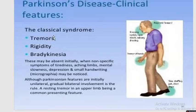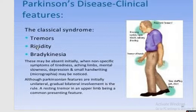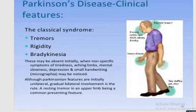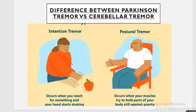The classical clinical features of Parkinson's disease will be tremors, rigidity, and bradykinesia. These three symptoms are very common in Parkinson's disease — you will find one of these symptoms in any Parkinson's patient. Now, in that patient there is a postural tremor.